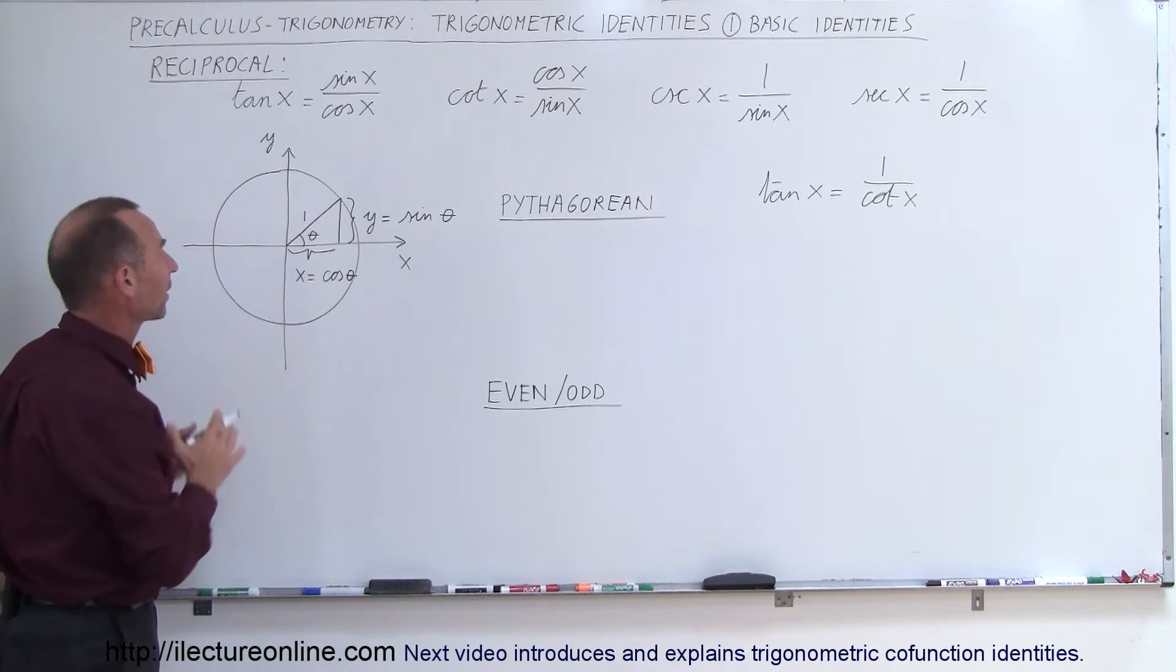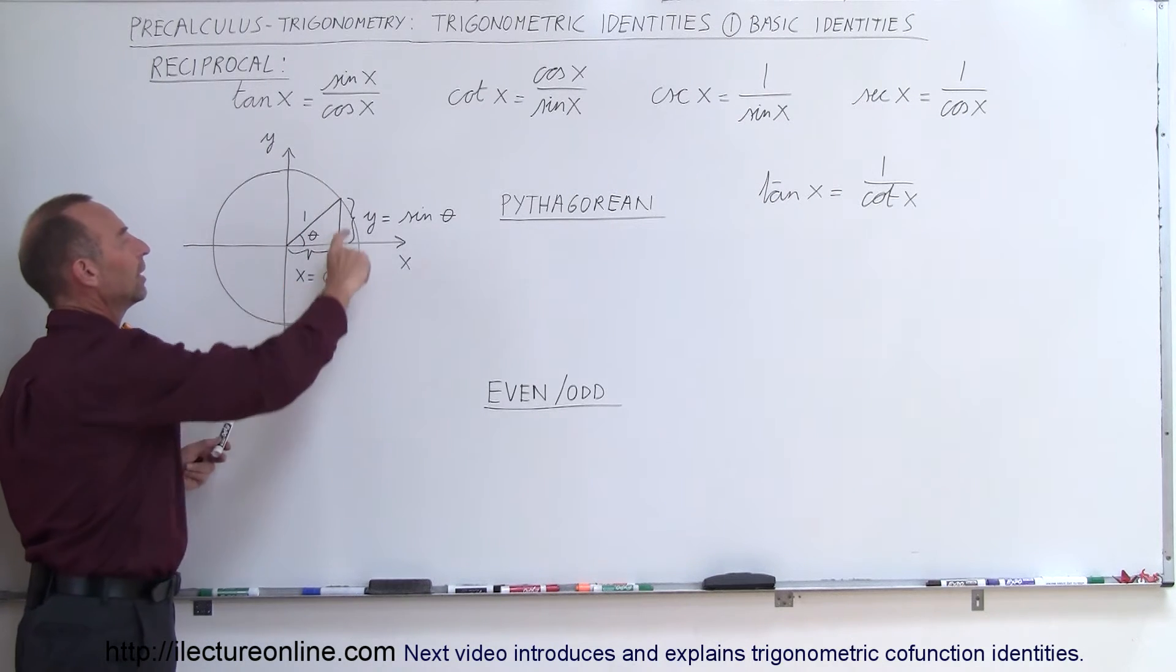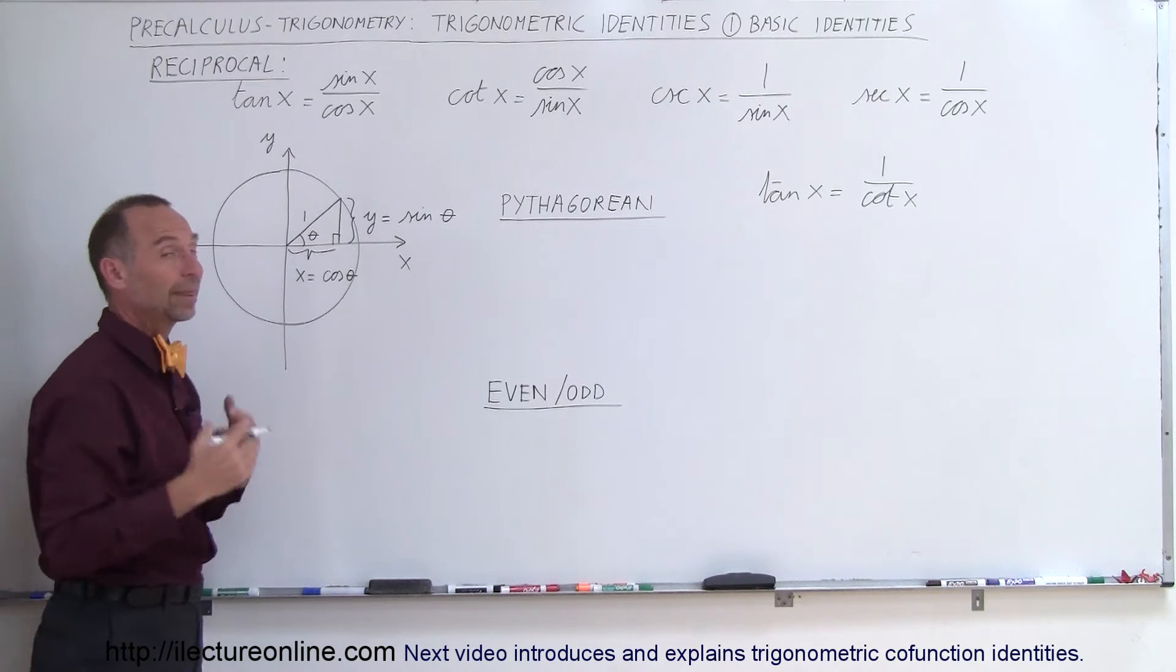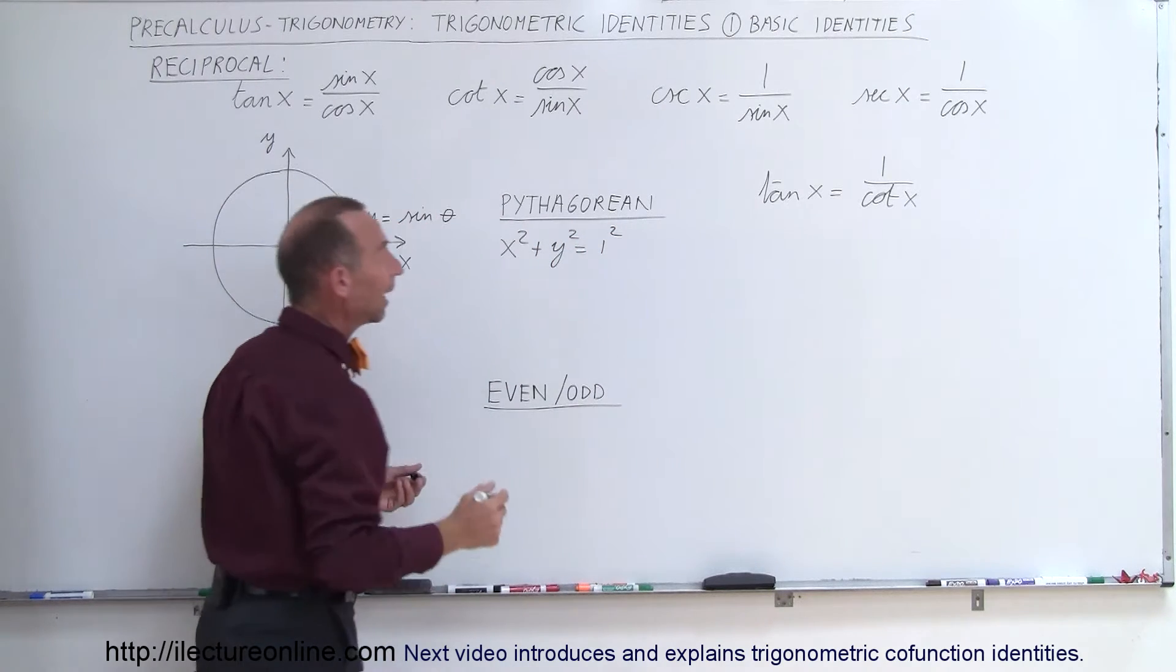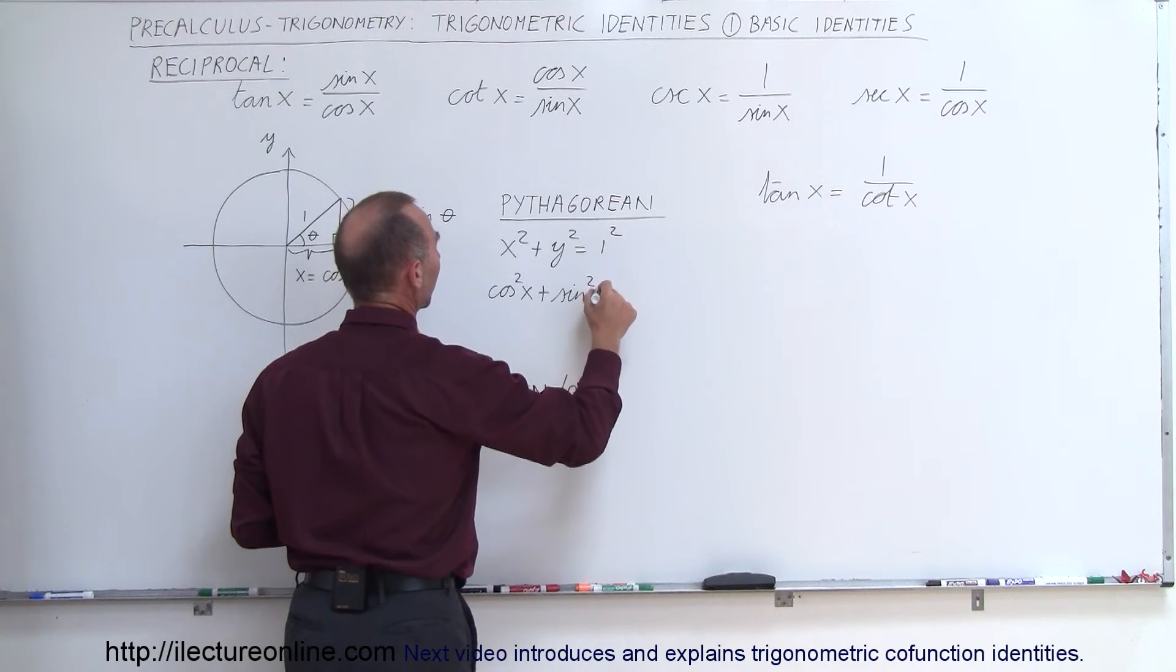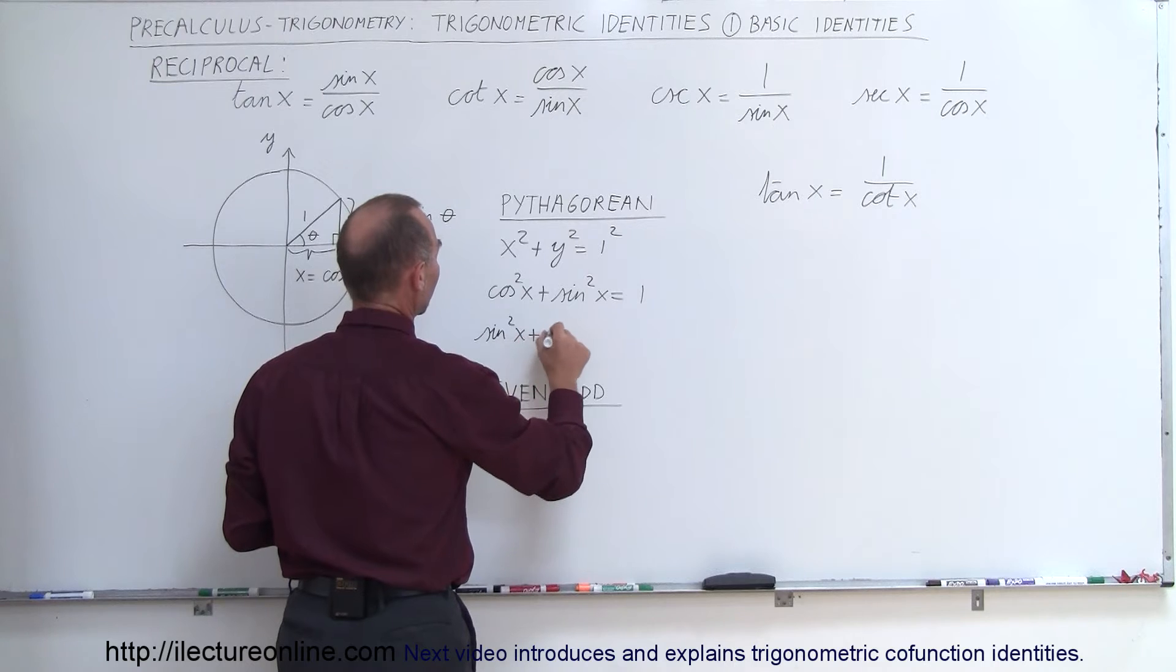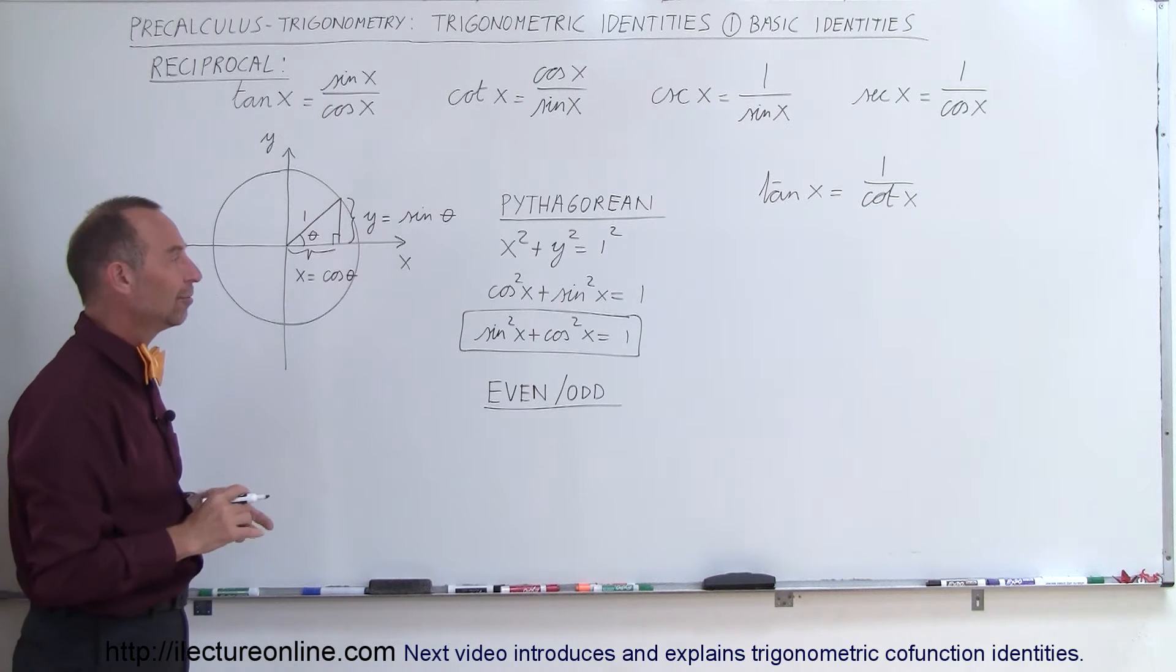The Pythagorean theorem comes from looking at our triangle here. Again we have a unit circle with radius equal to 1. This side x is equal to the cosine of the angle theta. This y is equal to the sine of the angle theta. Since this is a right angle triangle, we can use Pythagorean theorem. We can therefore say that x squared plus y squared is equal to 1 squared. Since x is equal to the cosine of theta and y is equal to the sine of theta, we can also write this as the cosine squared of x plus the sine squared of x equals 1. Typically you'll see it written this way instead: the sine squared of x plus the cosine squared of x equals 1. That seems to be the more common way of writing that equation. Now that is a very famous identity used quite a bit, and you'll see that in future videos.